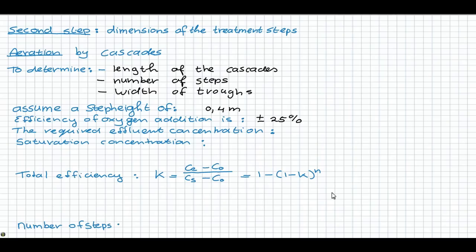Based on the required effluent concentration of, in our case, 8 milligrams oxygen per liter, and the saturation concentration that depends on temperature and partial pressure, we can calculate the total efficiency. For saturation concentration we take 11.3 milligrams per liter for a water temperature of 10 degrees Celsius. The efficiency is the desired effluent concentration minus the influent concentration of 0.5 milligrams oxygen per liter, divided by the saturation concentration minus the influent concentration. This gives an efficiency of 0.69.